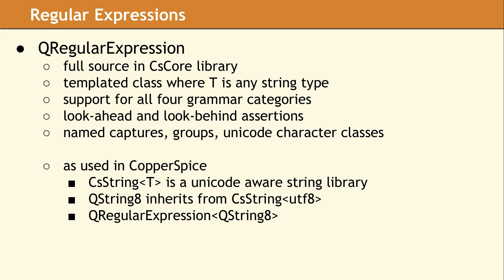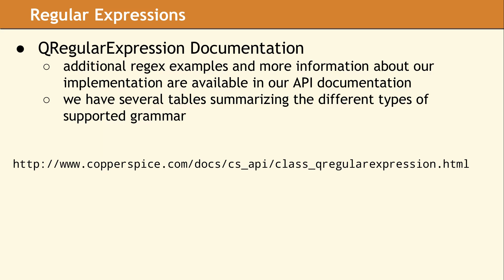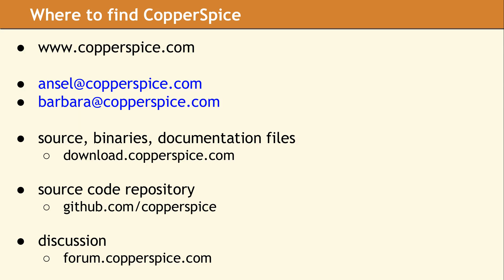The regular expression source is located in our repository on GitHub in source-core-string-regex. We are changing some of the options in the QRegularExpression class as we add more functionality to our regular expression library. The current documentation for QRegularExpression can be found on our website. You may also want to read the documentation for QString8, which has several methods that take a regex as a parameter. For more information about QRegularExpression, as well as any of our other libraries, please visit our website at www.copperspice.com.